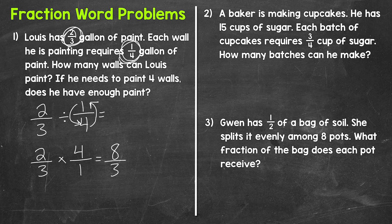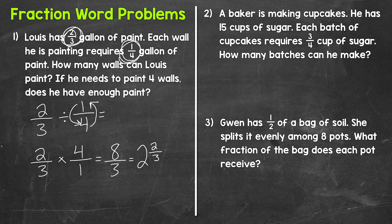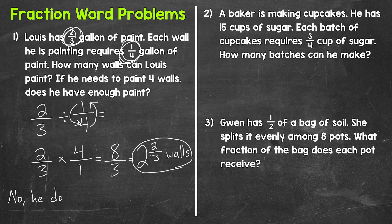Converting to a mixed number: eight divided by three — how many whole groups of three in eight? Two. That gets us to six, so we have a remainder of two. That's our numerator, and we keep the denominator, giving us two and two-thirds. So Lewis can paint two and two-thirds walls — not quite three. Can Lewis paint four walls? No, he does not have enough paint.